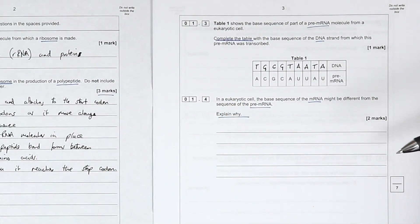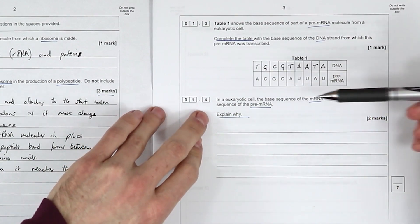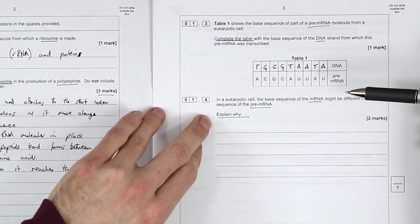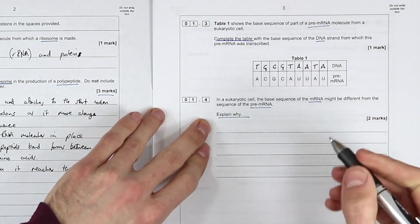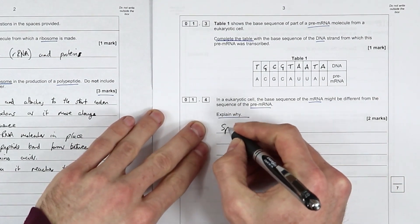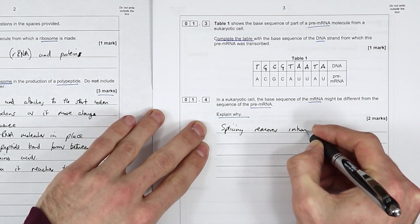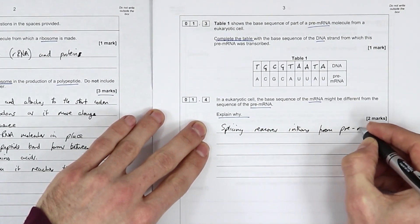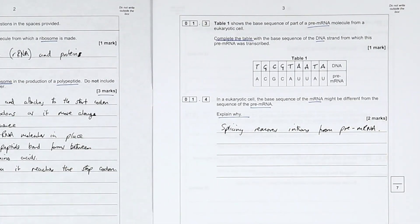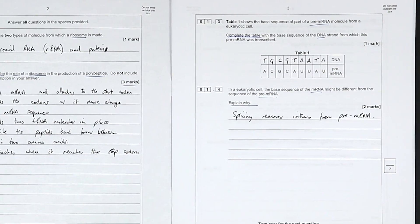Give reasons why the base sequence of messenger RNA may be different from the sequence of pre-messenger RNA. We can say splicing removes introns from pre-mRNA. One for splicing, one for removal of introns.